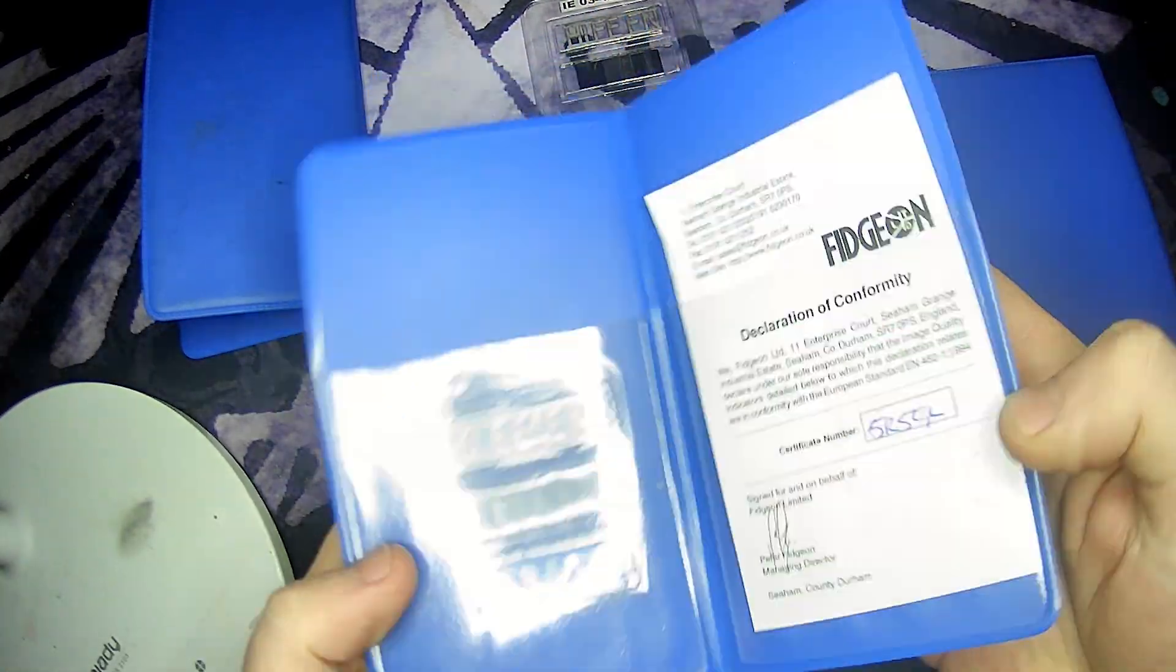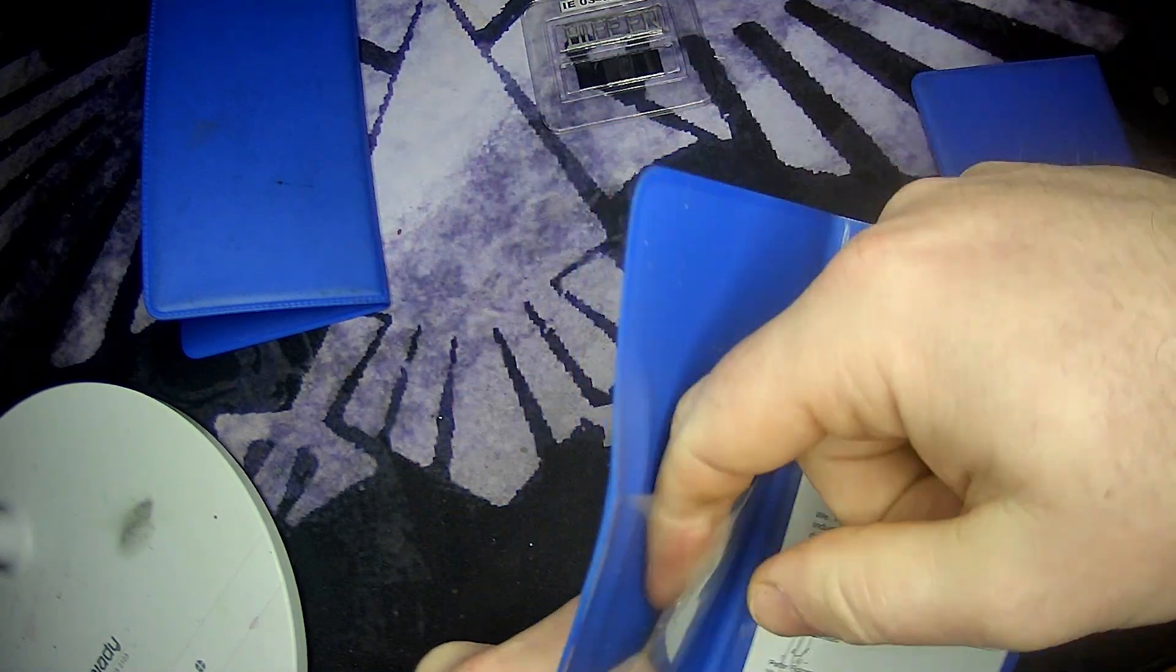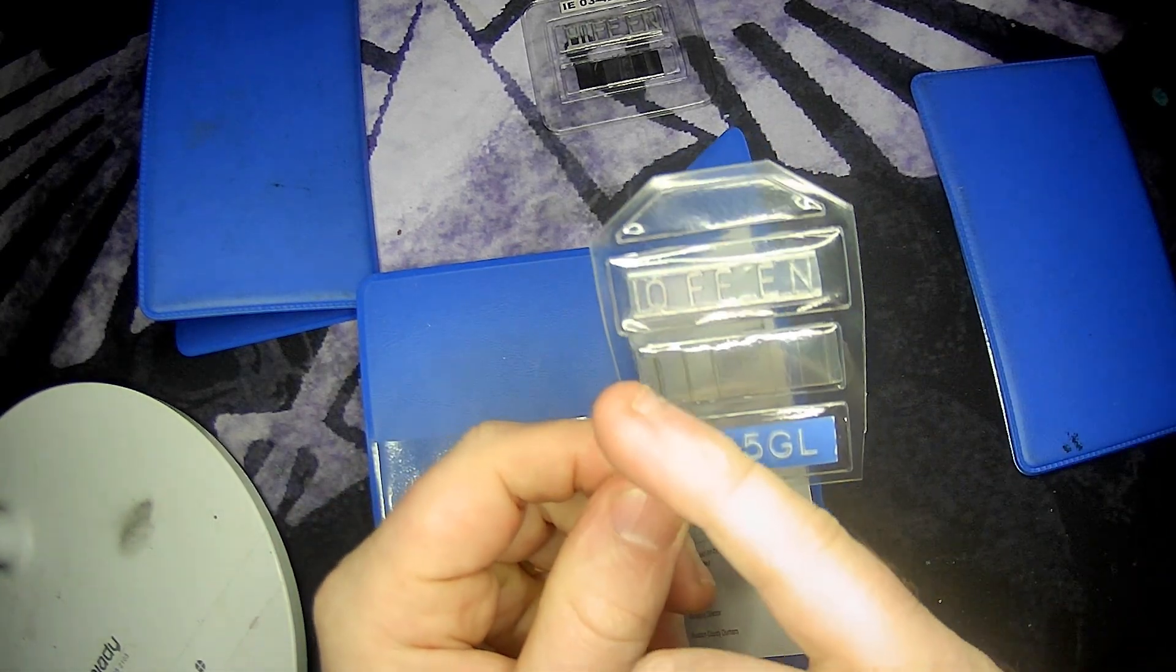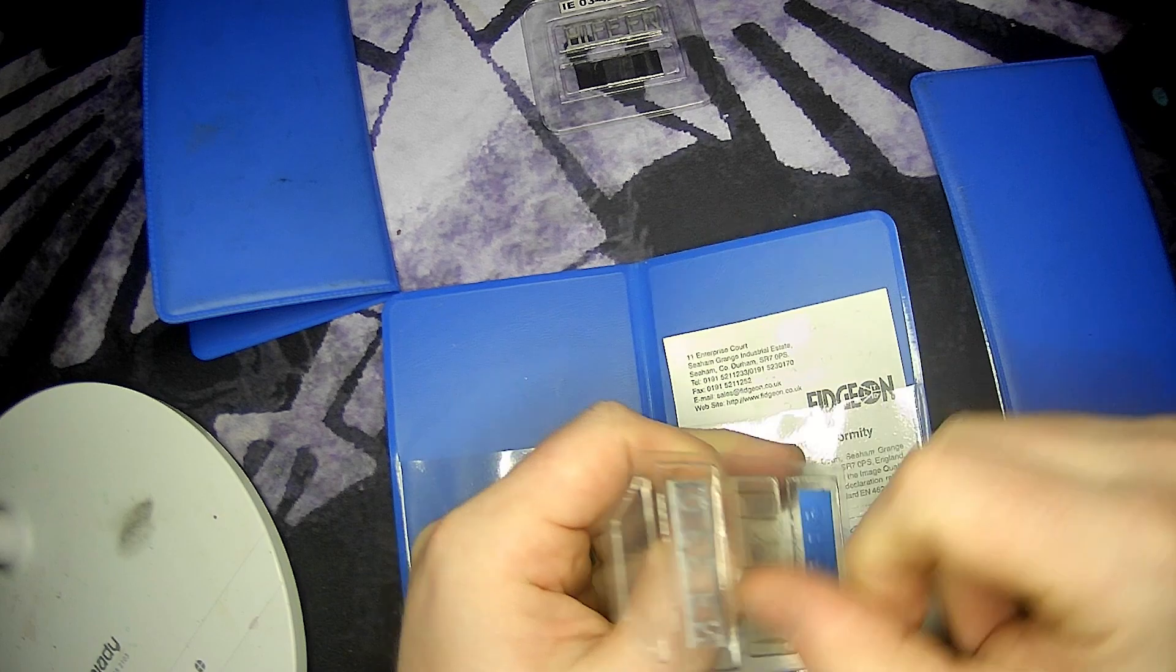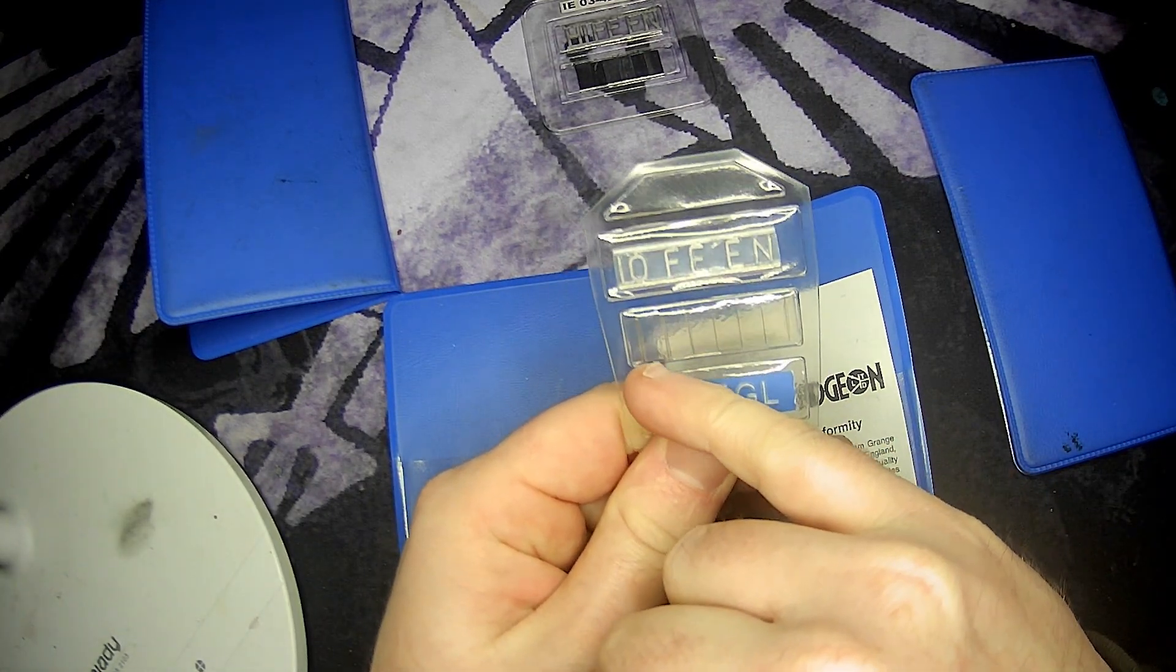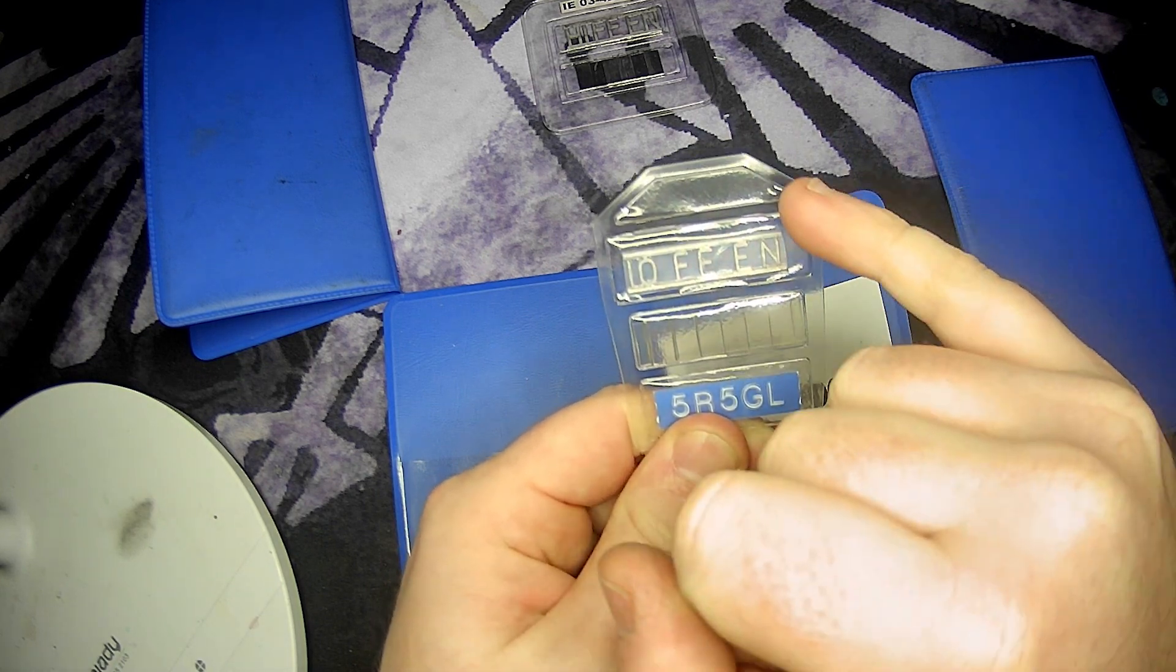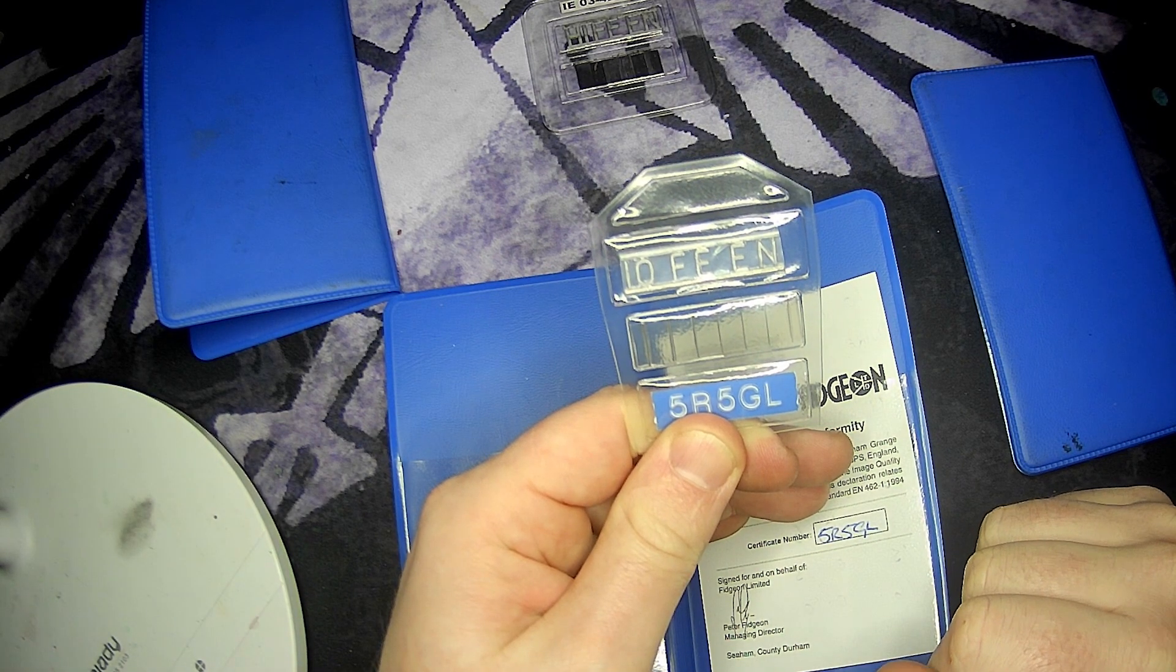I've got one here, which is a European norm standard type. So here we've got a 10 F-E-E-N, which means that it's a number 10 wire beneath that. So this one underneath is a number 10. Again, it's steel and it's in relation to the European norm standard.